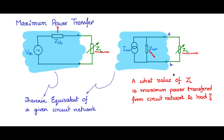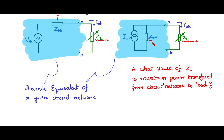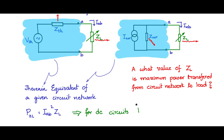Let us name the node AB, with the current flowing in the external load as IAB. The power that flows into the load ZL is given by IAB squared times ZL. For DC circuits, ZL is replaced by RL only (resistive), and it reduces to P_RL = IAB² × RL.